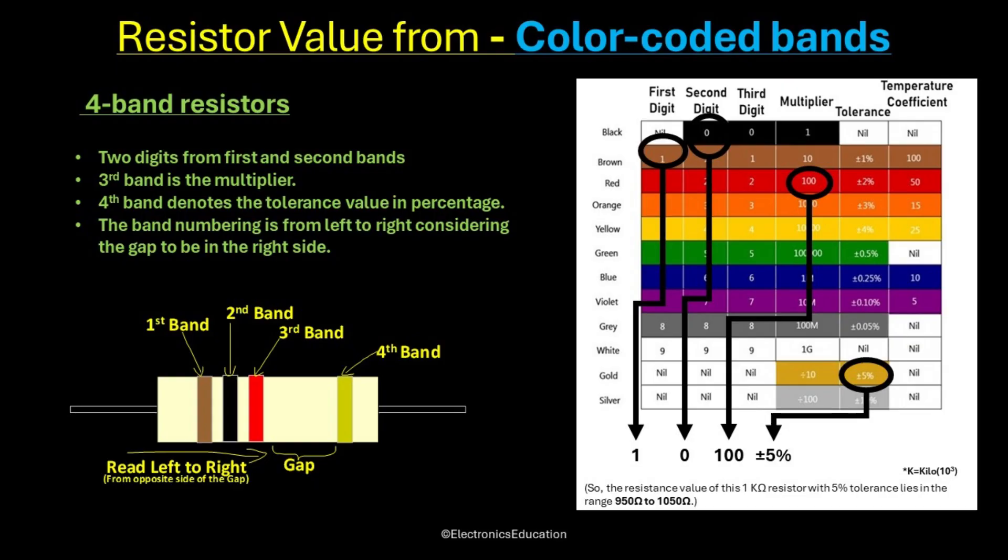So in this example shown here, the bands are brown, black, red, and gold. Thus the resistance value becomes 1 kiloohm. And due to the tolerance value of 5%, the final resistance value is anything between 950 ohm to 1050 ohm.